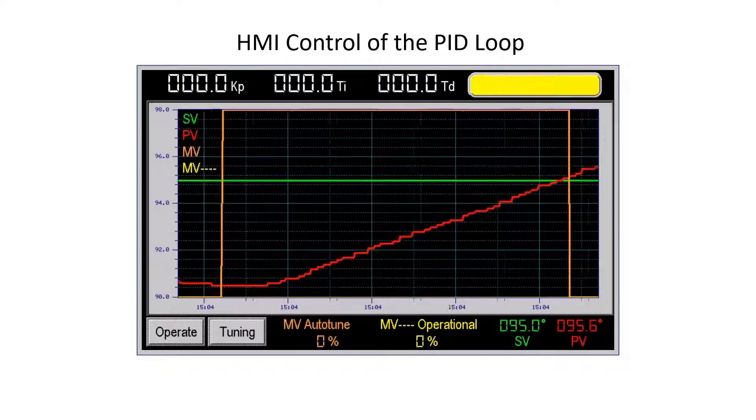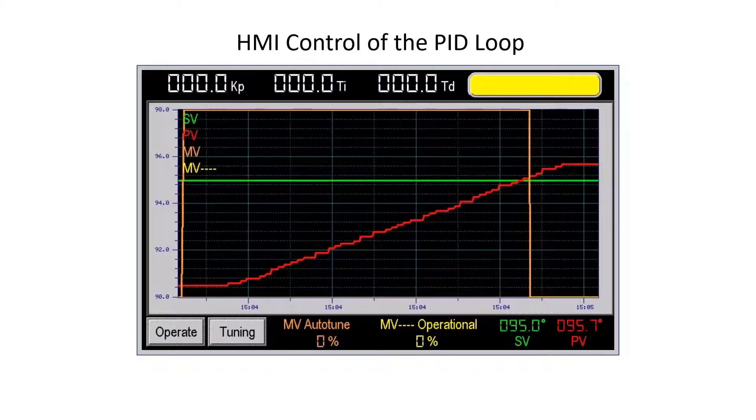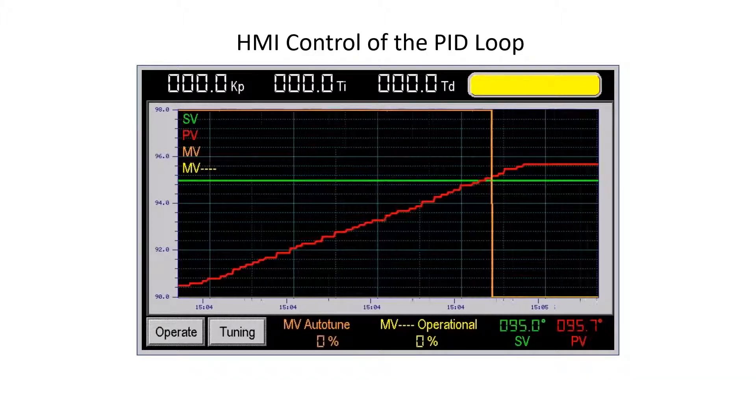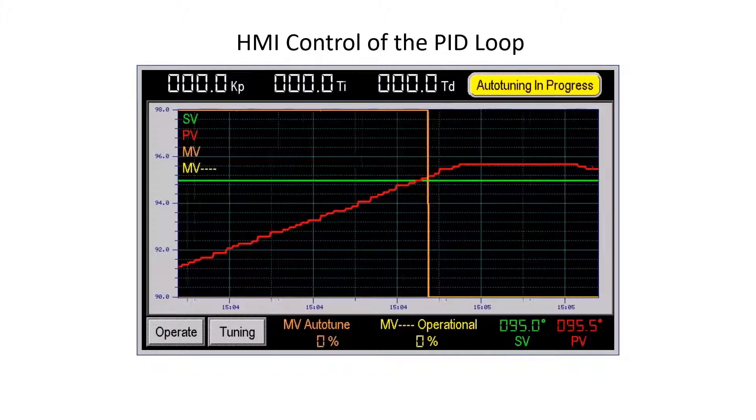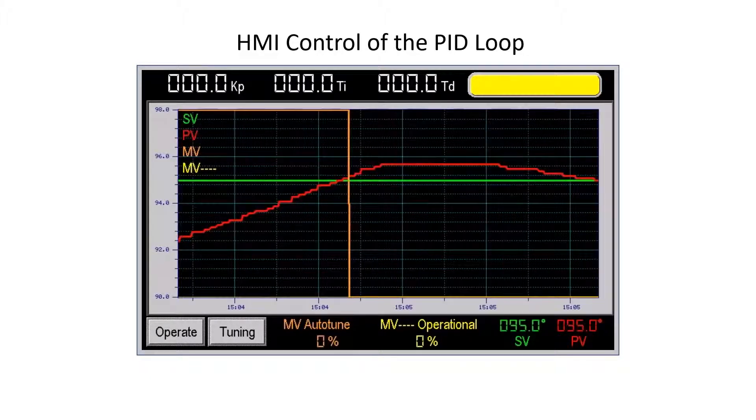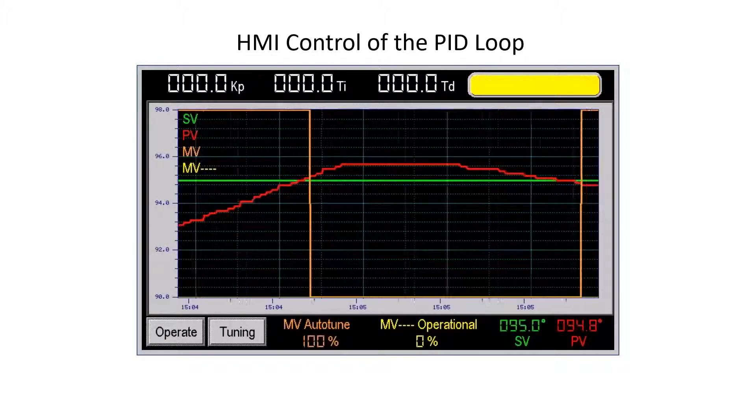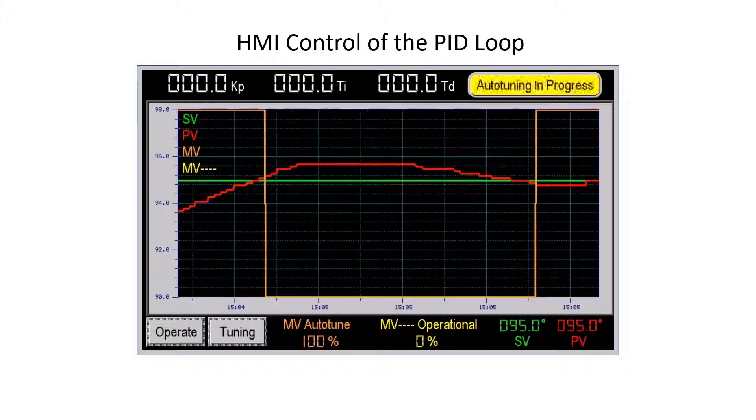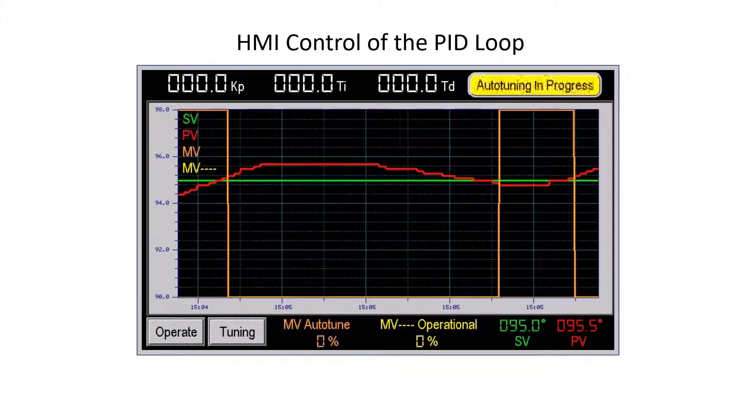The auto-tune uses the Ziegler-Nichols closed loop auto-tuning method. The auto-tune MV will go to 100%. The PV will increase and cross the SV and the MV will go to zero. This will occur three times.